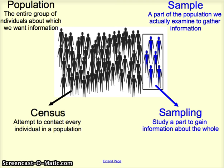It is possible to attempt to contact everybody — that's called a census. If I wanted to survey my class of AP students, that wouldn't be hard. But if I was interested in the opinions of voters in the United States on a current debate, for example over Obamacare, it would be very hard to talk to everybody in the U.S., so we would take a sample instead.